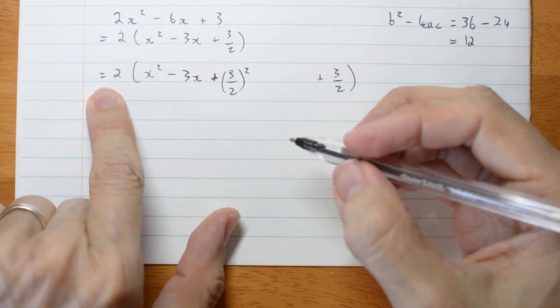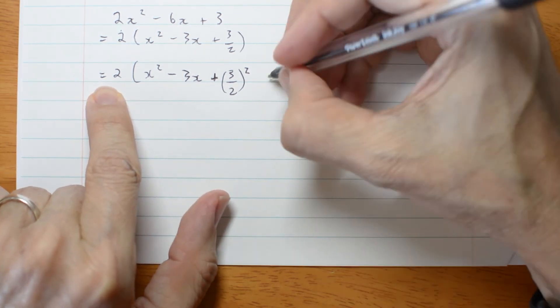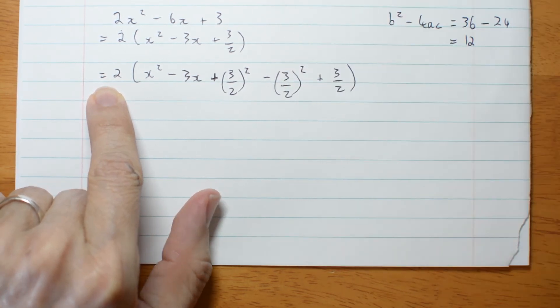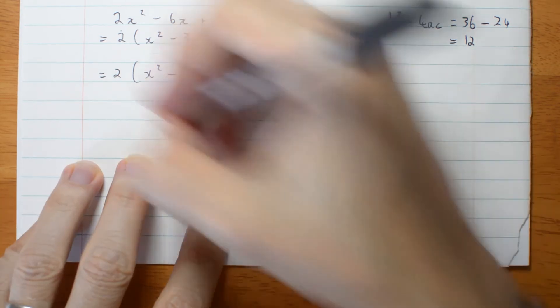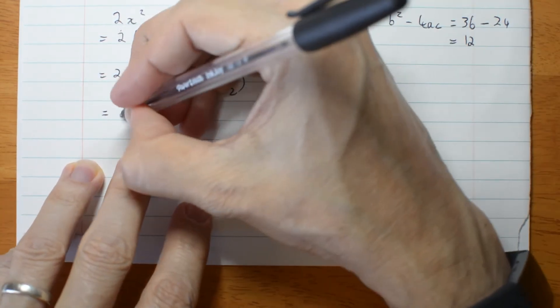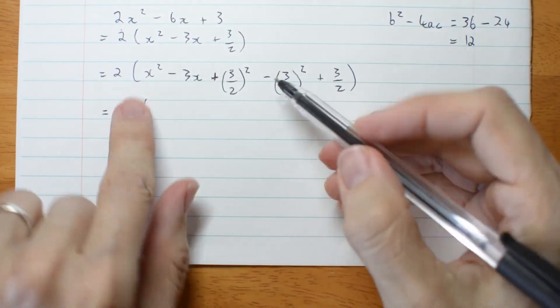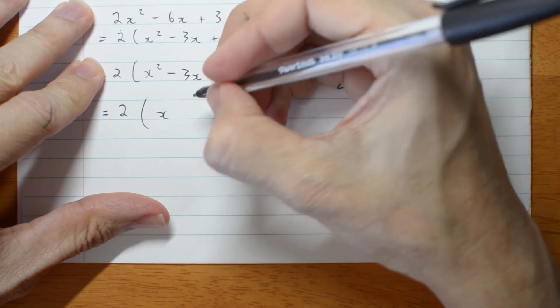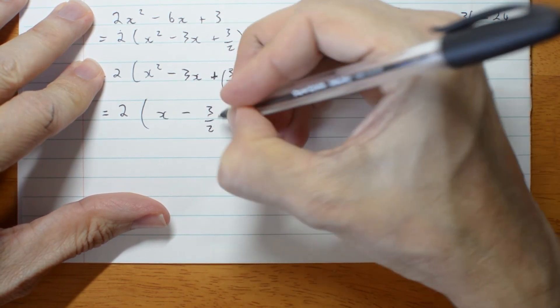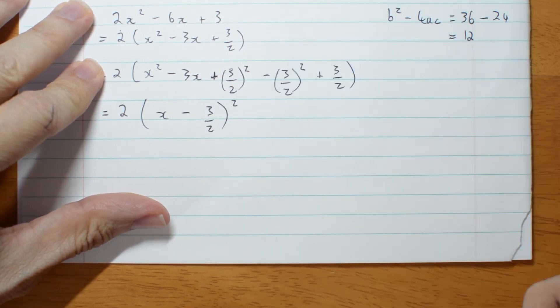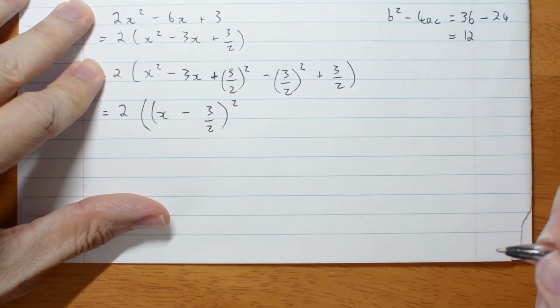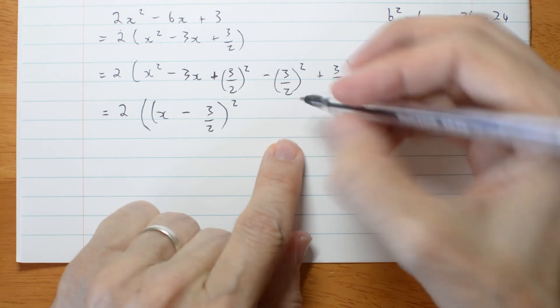So it's plus, always plus, 3 on 2 squared. Then, because I've said it's equal, I better subtract the thing I just added. Subtract 3 on 2 squared. Okay, leave the 2. This part is a perfect square. It's x minus 3 on 2 all squared. Except I needed another set of brackets.